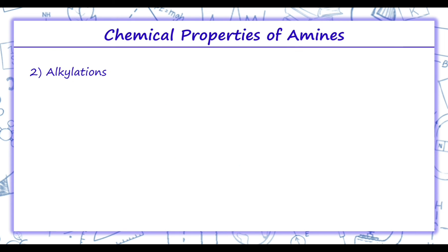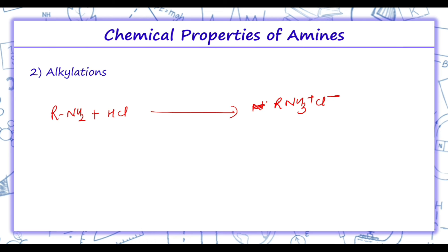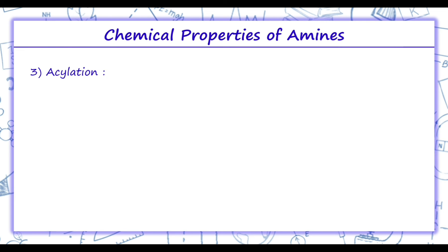Moving on to the next chemical property — alkylation. When an alkyl amine NH2 is treated with alkyl halide, we get an alkyl ammonium salt, R-NH3+ Cl−.